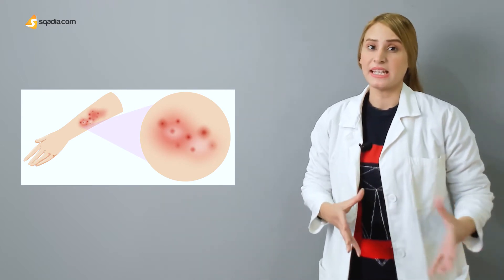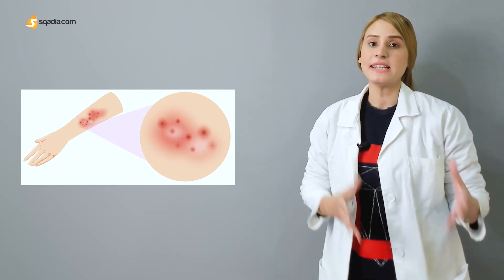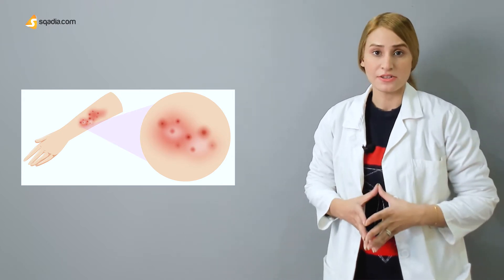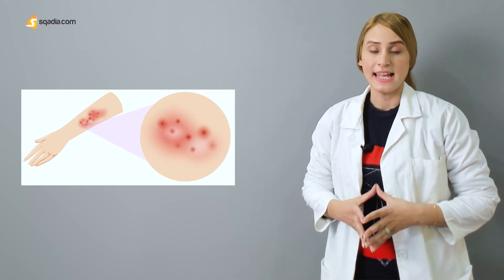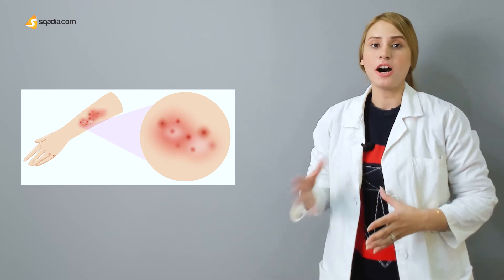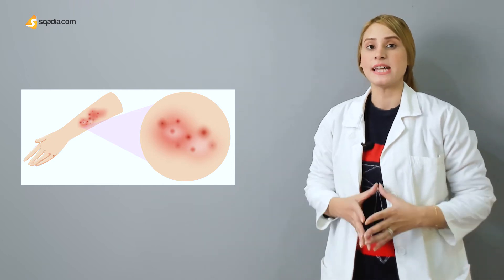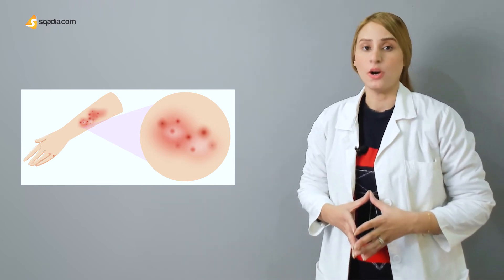usually begins in infancy. This red, itchy rash usually occurs where the skin flexes, inside the elbows, behind the knees, and in front of the neck. The rash may leak fluid when scratched and crust over.